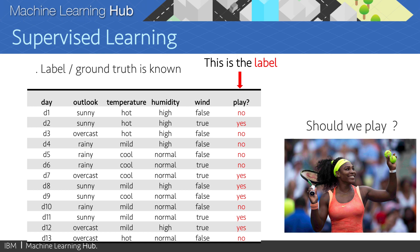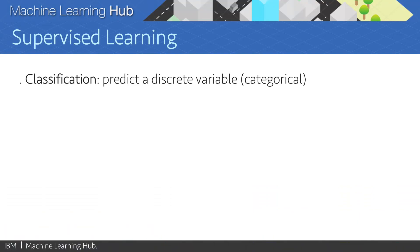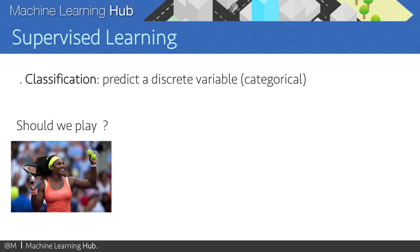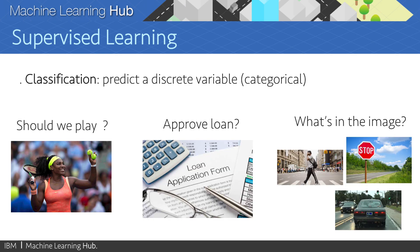So, that means that this dataset corresponds to a supervised learning problem. Now, if what you want to predict is a discrete variable, meaning that there is a finite number of categories or possible values that such variable can take, you are facing a classification problem. Whether you should play tennis or not, whether you should give somebody a loan or not, whether the image contains a car, a pedestrian, or a stop sign, all of these are classification problems.